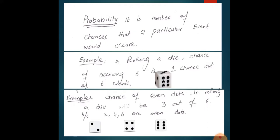For example, we want to check the number of chances of getting even dots in a rolling die. There will be three outcomes: two, four, and six. So there will be three out of six chances of getting two, four, or six. The probability of this event will be three out of six, or three over six.